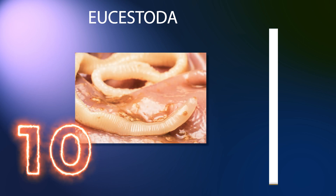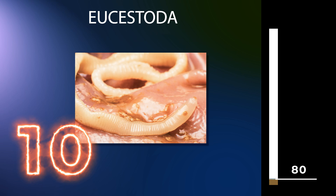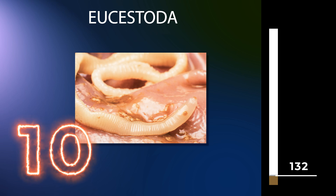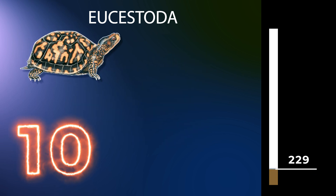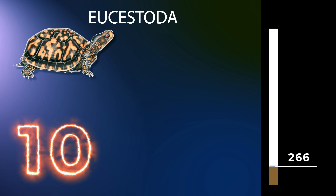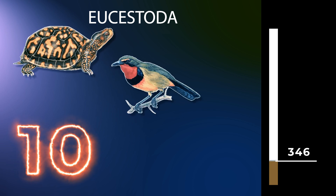Eucestoda, commonly referred to as tapeworms, is the larger of the two subclasses of flatworms in the class Cestoda. The other subclass is Cestodaria. Larvae have six posterior hooks on the scolex head, in contrast to the ten-hook Cestodaria.